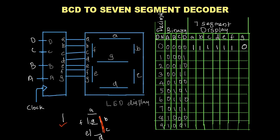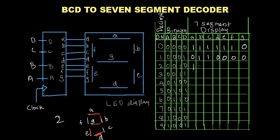To display decimal 1, I have to turn on B and C and turn off the remaining LEDs. To display decimal 2, I have to turn on A, then B, then G, then E, and then D. The remaining LEDs — C and F — will be turned off. So: A=1, B=1, C=0, D=1, E=1, F=0, G=1.